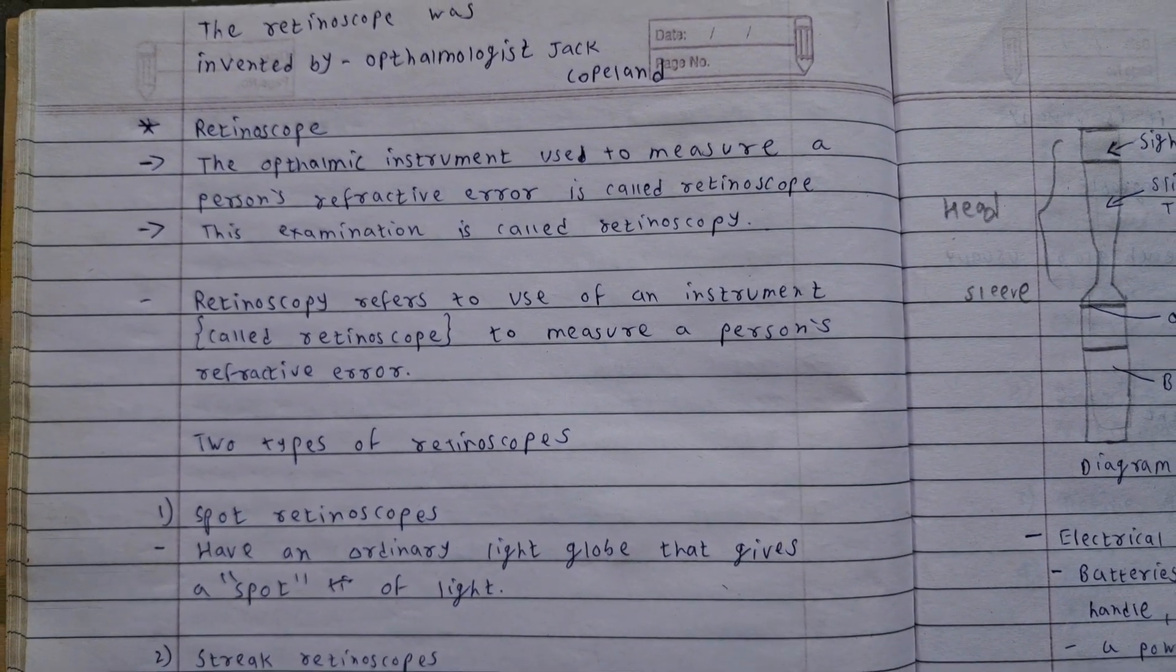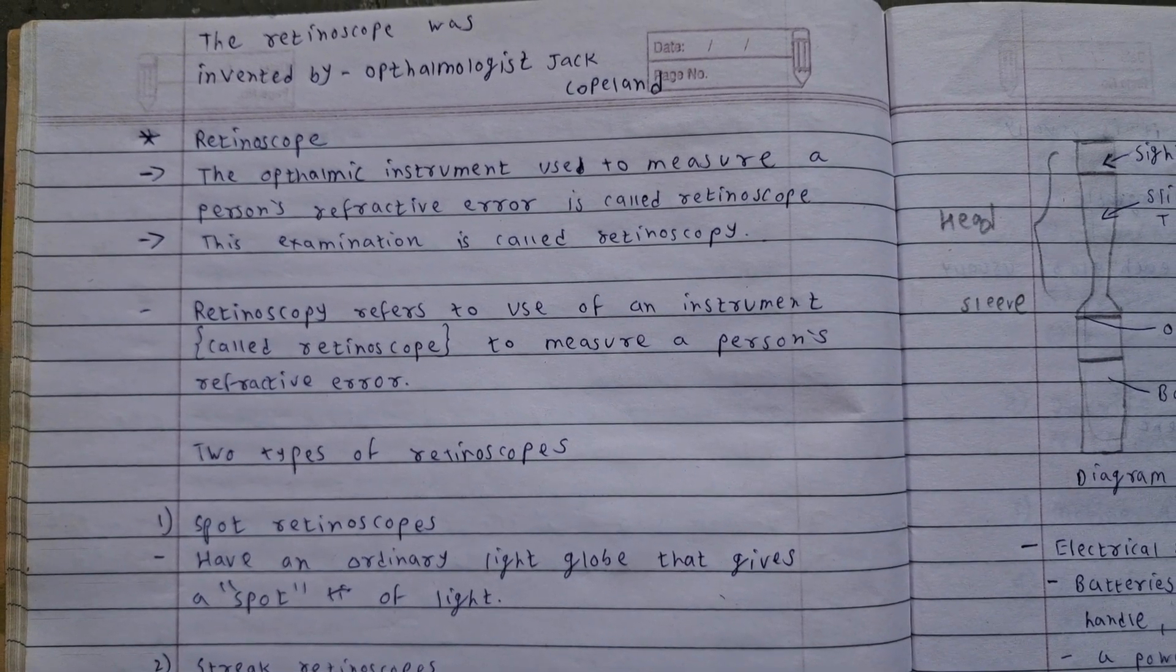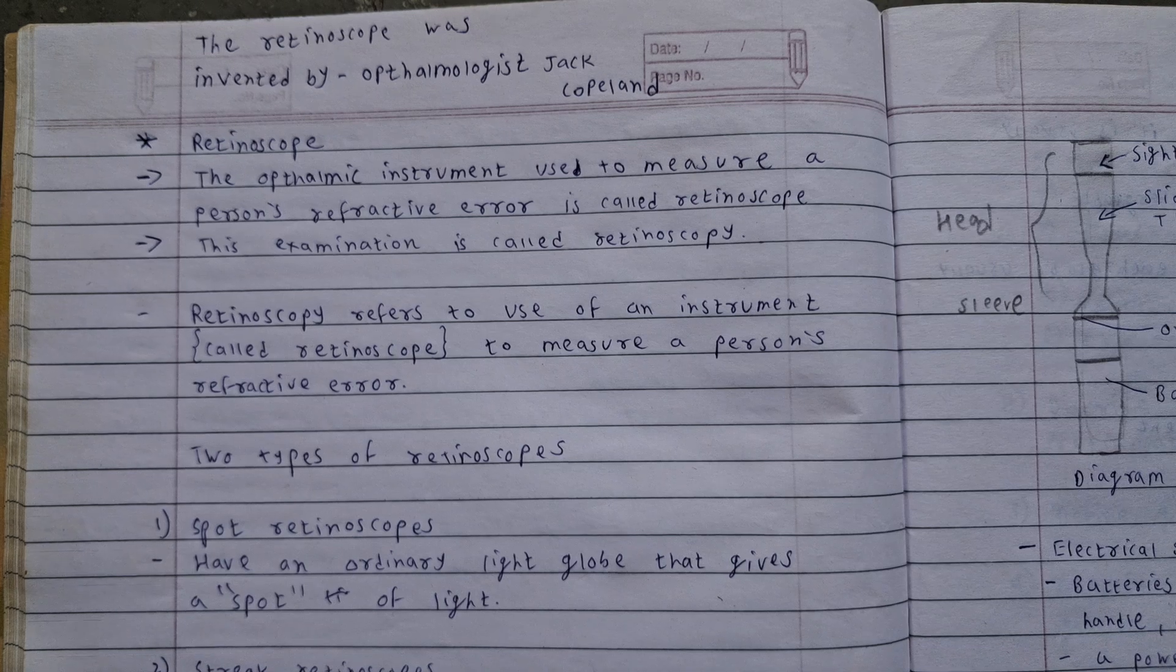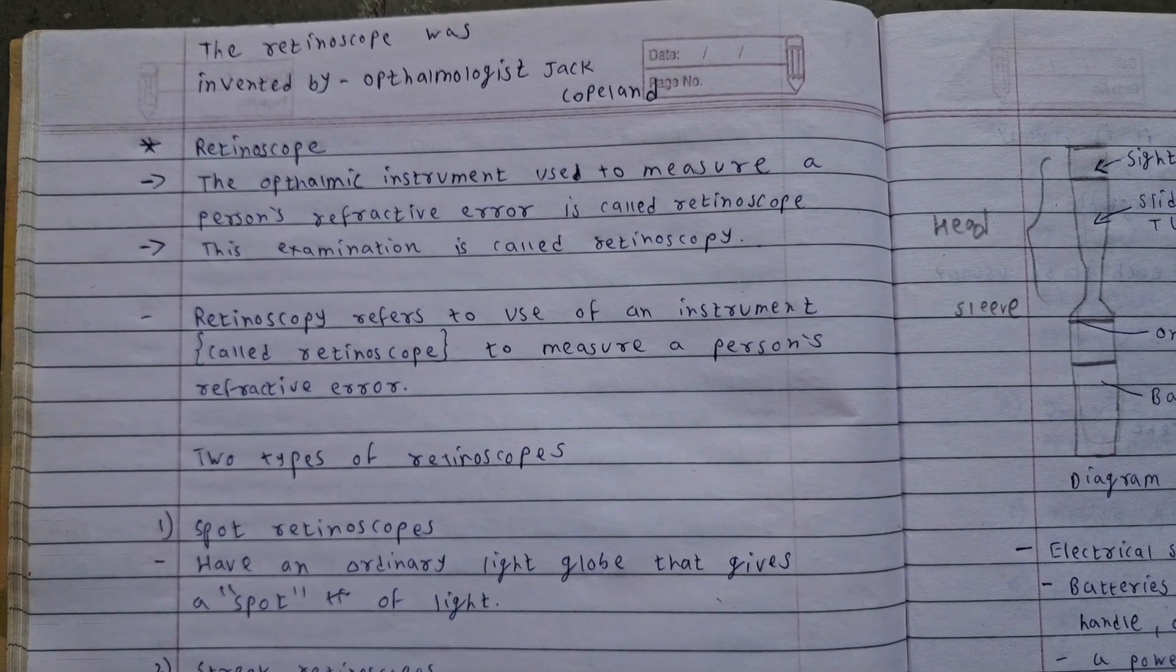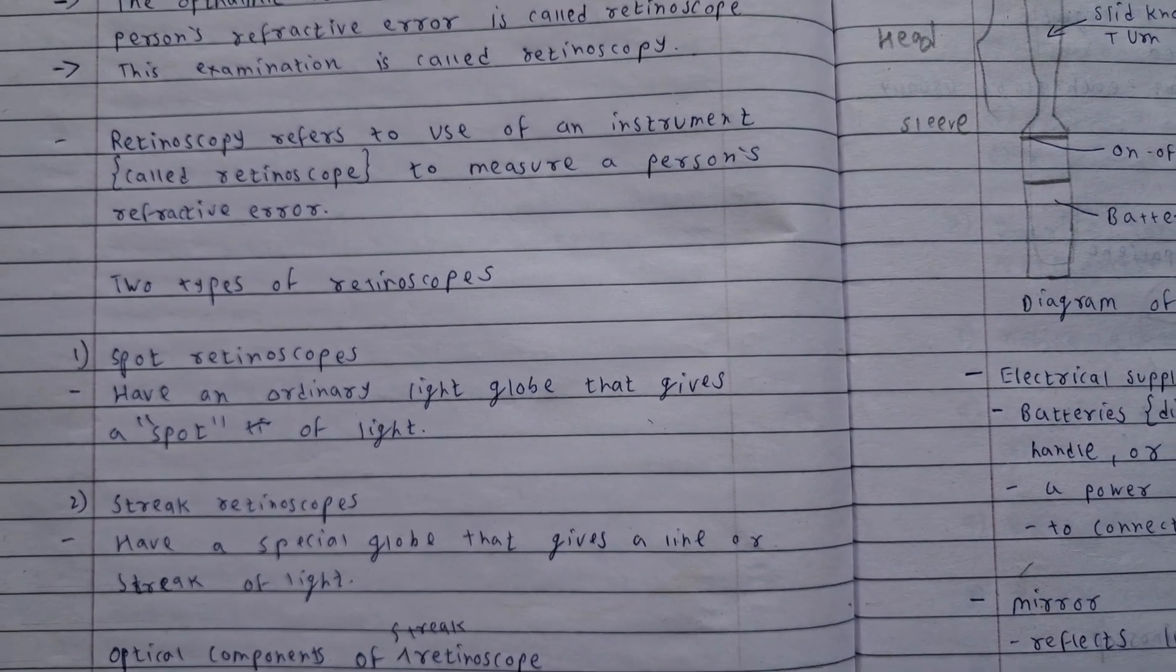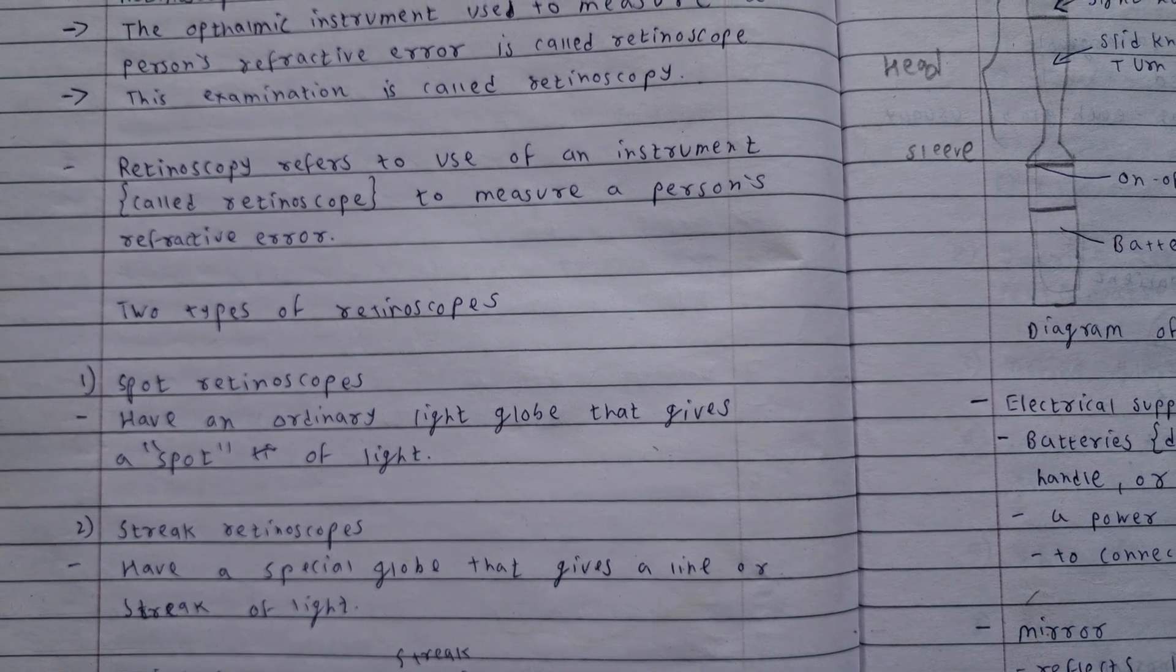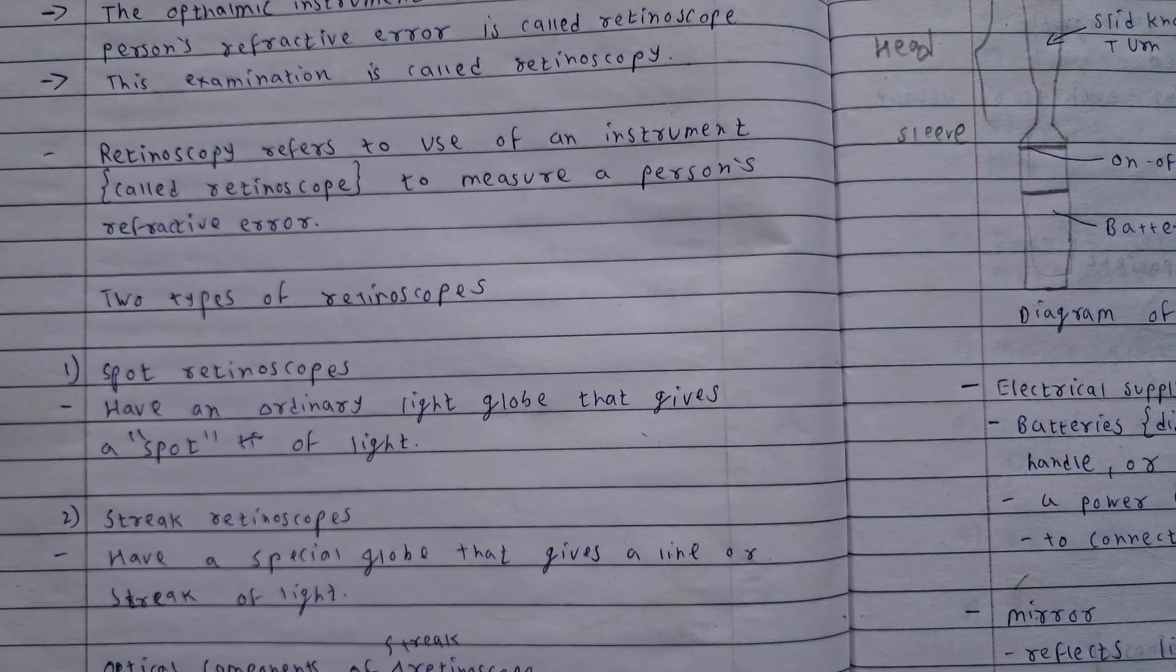This examination is called retinoscopy, or the procedure that examines a person's refractive error is called retinoscopy. Retinoscopy refers to use of an instrument called retinoscope to measure a person's refractive error.